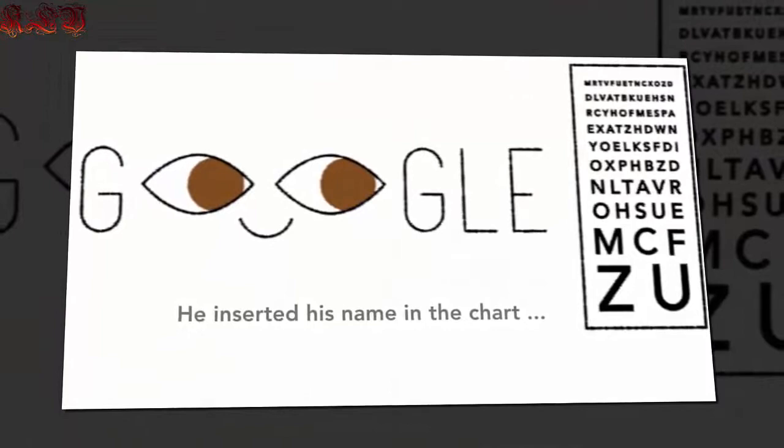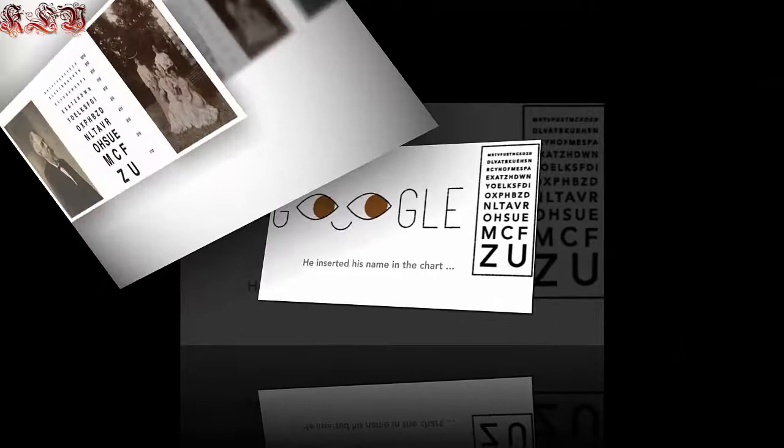Notably, he also hid his own name in his eye chart. The first letter of each line from the second to the sixth row spells his surname, while the last letter of each line from the second to the tenth line spells out his first name.